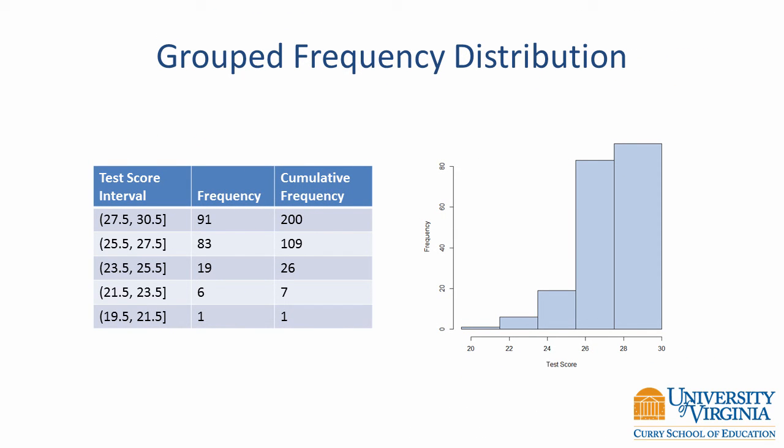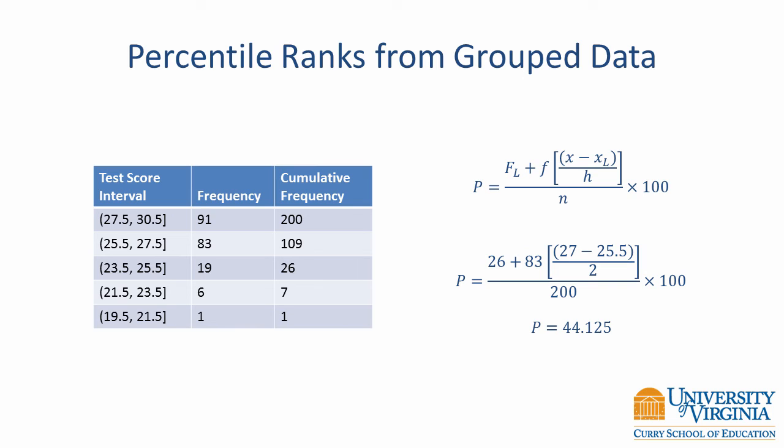This slide shows our example data as a group frequency distribution and histogram. For percentile ranks, we use the equation shown on the slide. It is similar to the previous equation for percentile ranks, but instead of assuming that the value is at the midpoint of the interval, we compute its actual position in the interval. That is, instead of taking half of the frequency at the value of interest, we take a frequency that is proportional to the distance of the value in the interval. For example, if the value of interest is 75% of the way into the interval, then we take 75% of the frequency of observations. Using the group frequency table of our example data, the percentile rank for a score of 27 is 44.125. This value is slightly different than the percentile rank computed from the ungrouped frequency table. The difference is due to a loss of precision when grouping data into intervals.